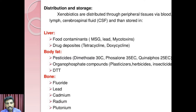Then, pesticides such as dimethoate 30C, cypermethrin 35EC, and quinalphos 25EC — these are all pesticides which are deposited in the fat of the body. Also, plasticizers, herbicides, and insecticides — these three elements are composed of organophosphate molecules. These organophosphate compounds are deposited inside the body in the form of fat, and also DDT is also deposited in the fat of the body.